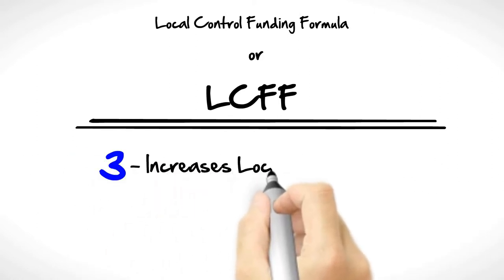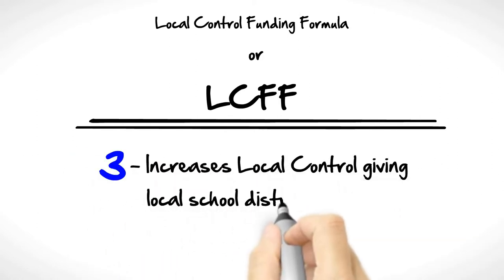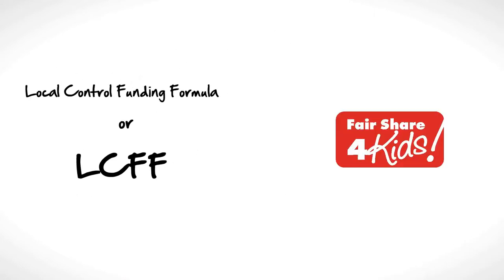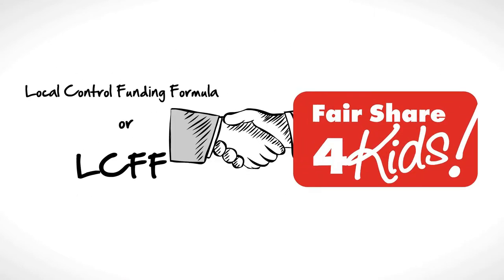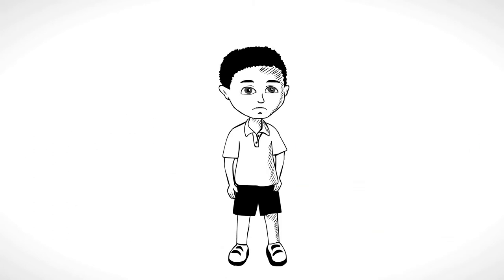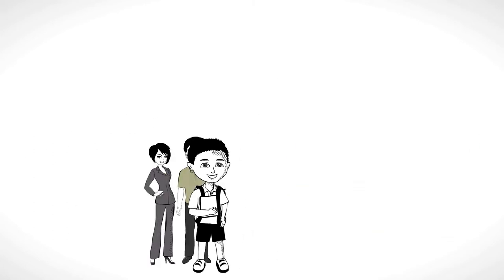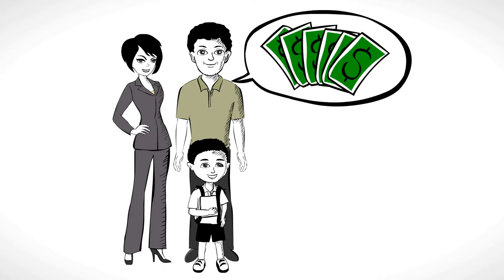Three: Increases local control, giving local school districts more options on how to best use funds. Fair Share for Kids supports this plan, so long as low-income students receive the support they need and parents have a voice on how monies are spent.